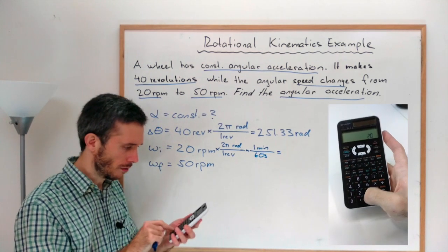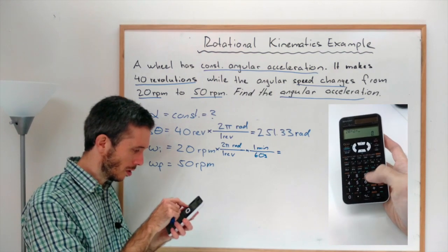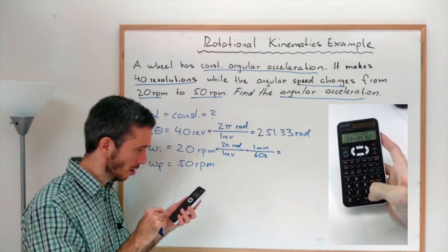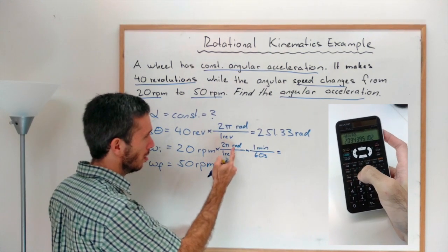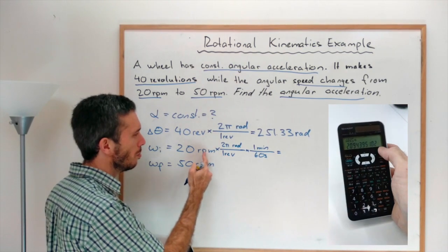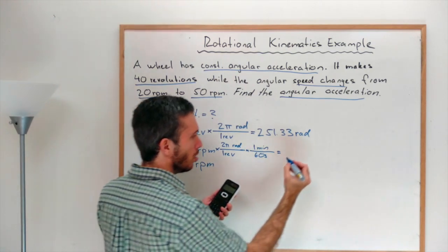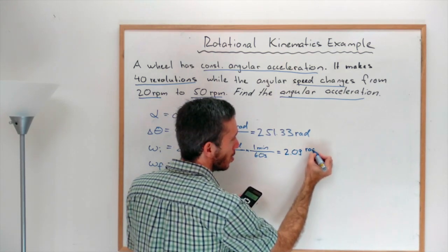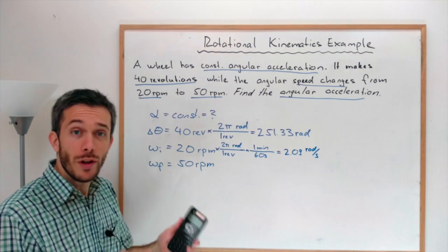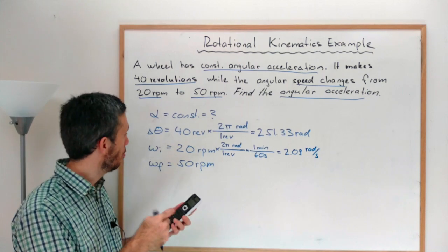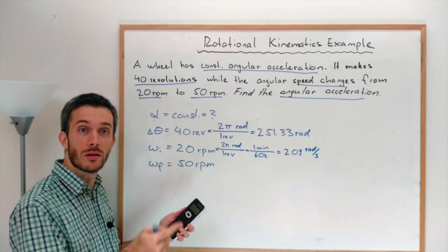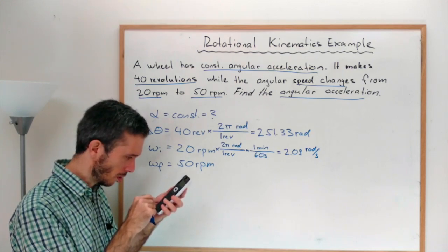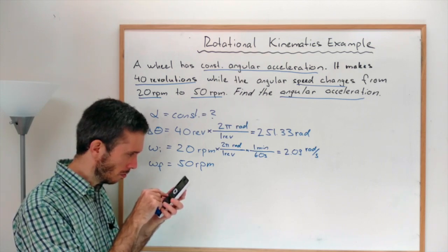So we have 20 times 2 times pi divided by 60 seconds. So the revolution times revolution per minute is cancelled by minute, so I get 2.09 rads per second. If you have a calculator that can store intermediate values, that would be a good idea to use that. So I'm gonna try to store this in some variable on my calculator, storage E.